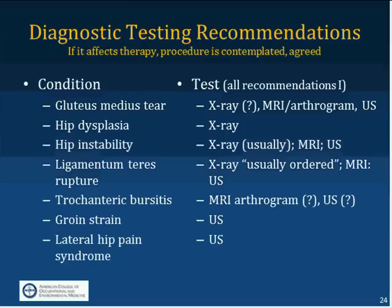MR arthrograms are listed for trochanteric bursitis, but it's usually a clinically obvious diagnosis, so I wouldn't take this as a recommendation to do it all the time. Groin strains and lateral hip pain are listed as being detected ultrasonographically — people are starting to get ultrasound machines in their office and using them to make quick diagnoses, but the question is who is trained and how well they are trained to do soft tissue ultrasound.